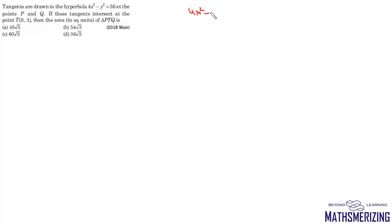The question is: tangents are drawn to hyperbola 4x² minus y² equals 36 at the points P and Q. If the tangents intersect at the point T, which is (0, 3), find the area of triangle PTQ.